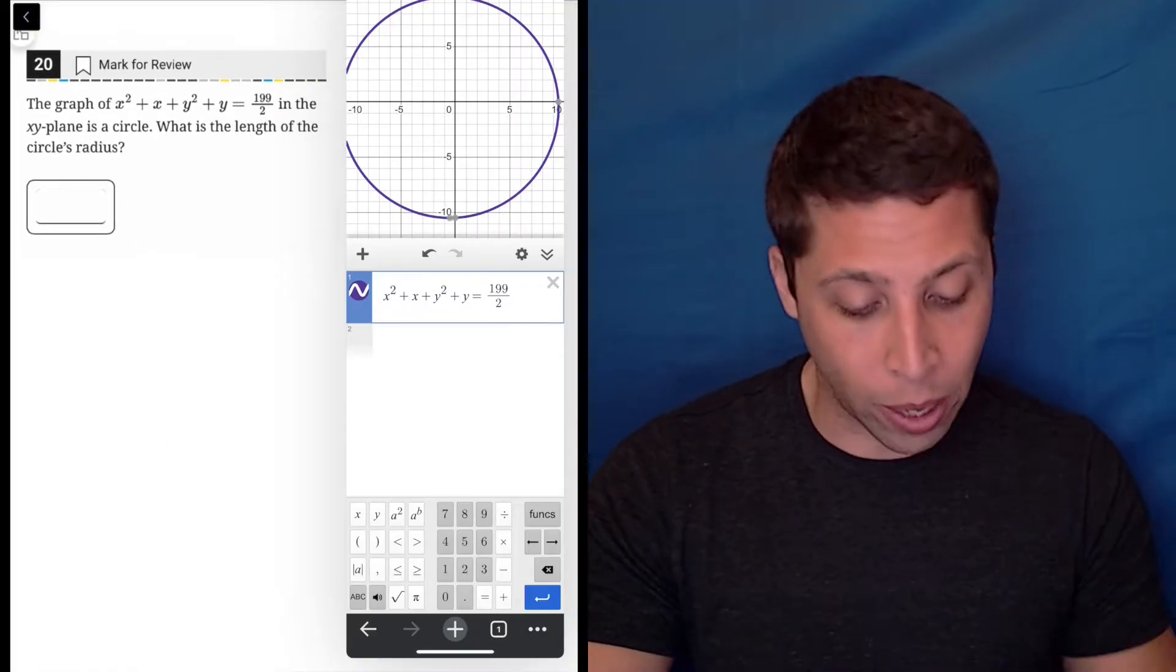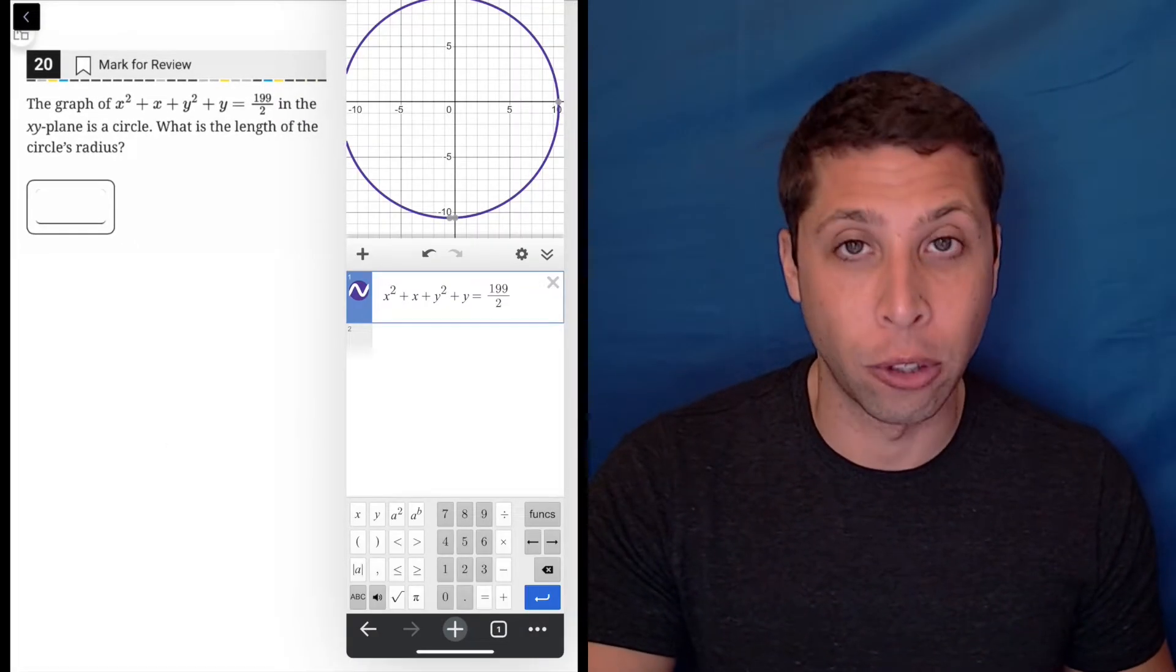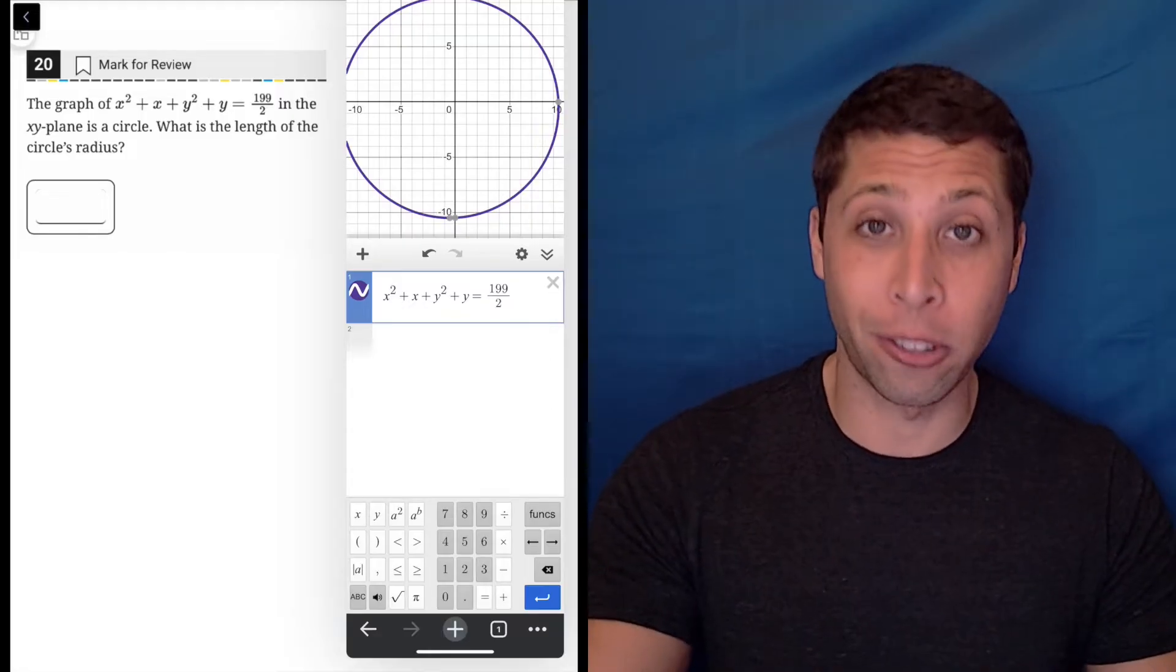I have graphed this already. So that is my equation, x squared plus x plus y squared plus y equals 199 over 2. It very perfectly gives me a circle, so that's great.